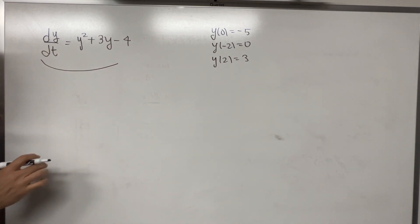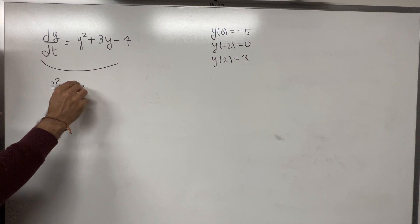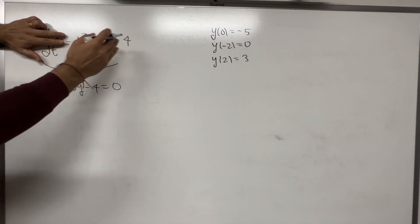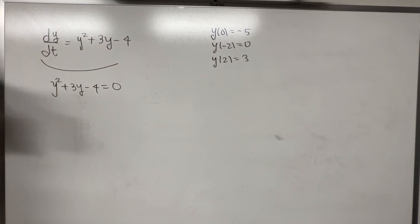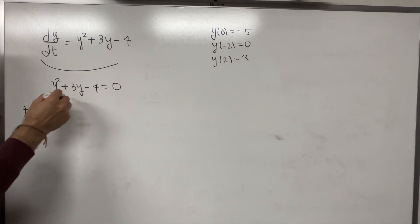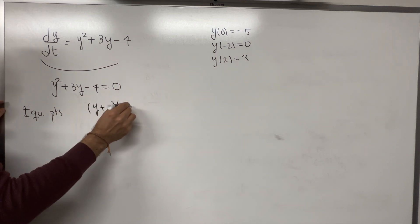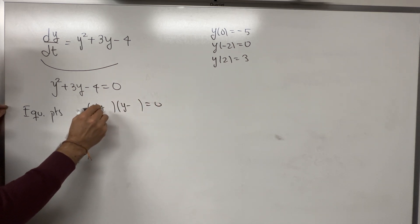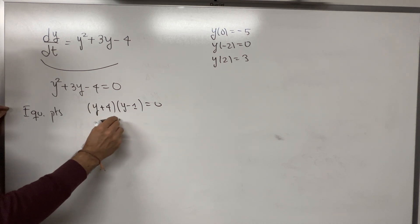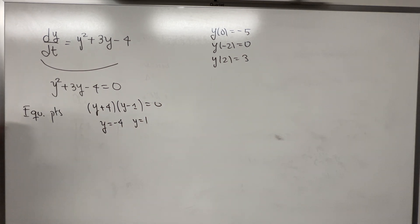The first step is to find the equilibrium points. To do that, we need to solve this equation — this is a quadratic equation. Whatever is in front of dy/dt, we set that equal to zero, and that will give us the equilibrium points. We can factor this as (y + 4)(y - 1) = 0, so either y = -4 or y = 1.